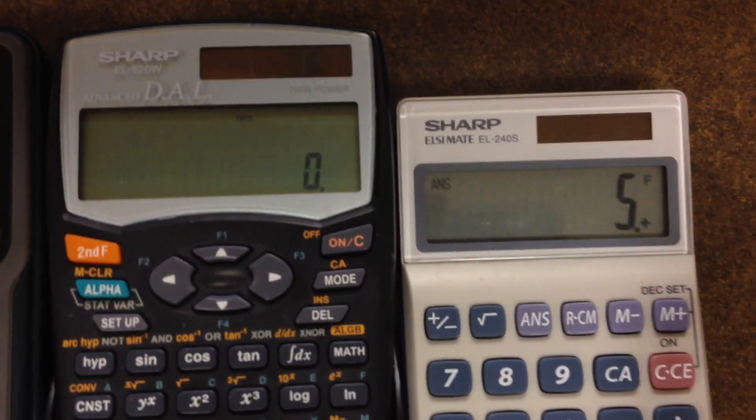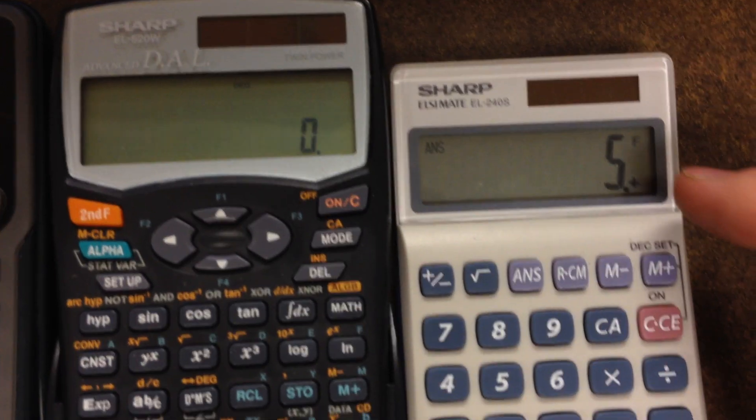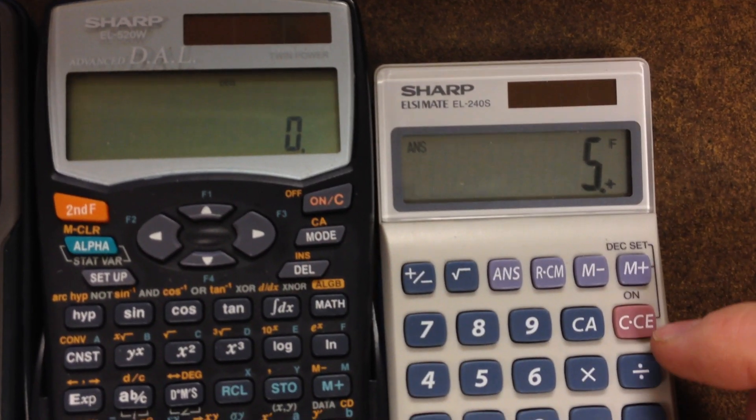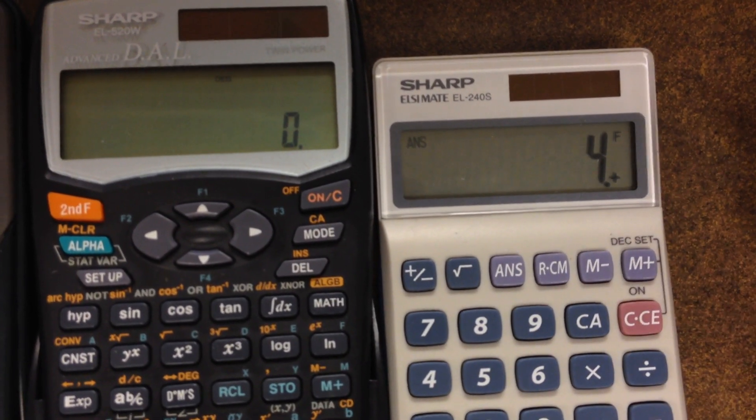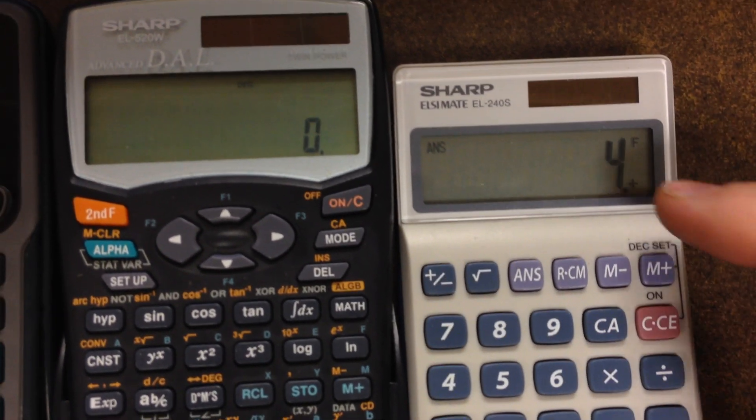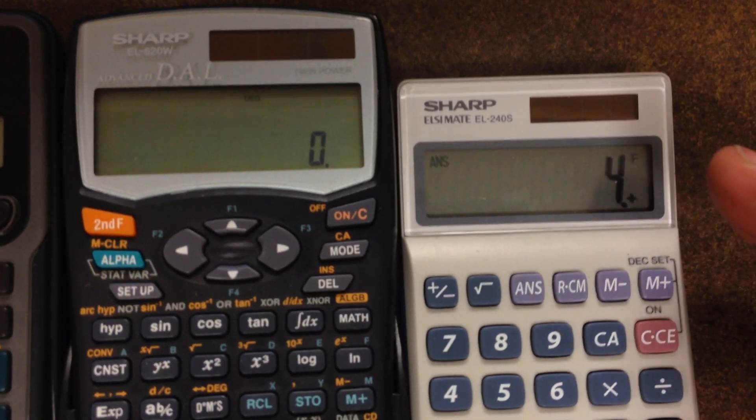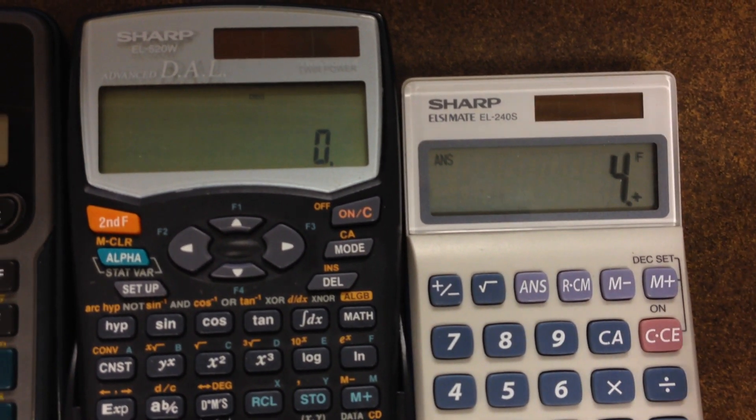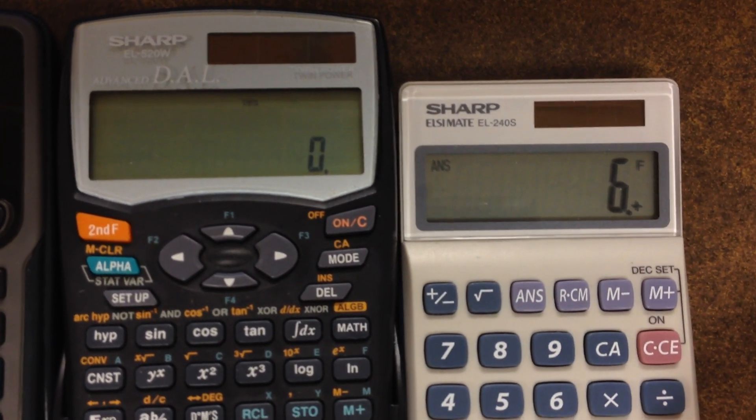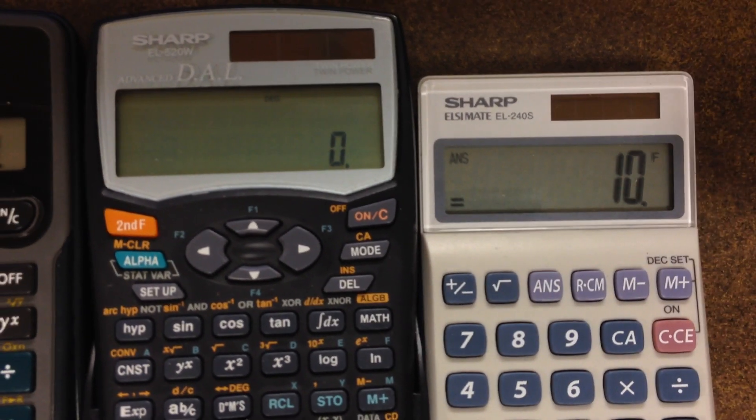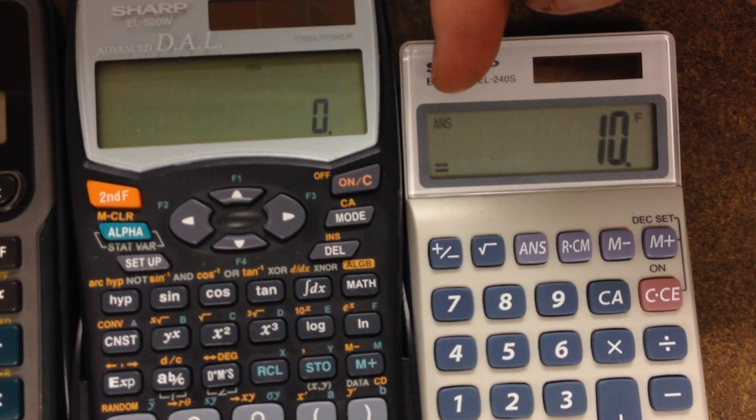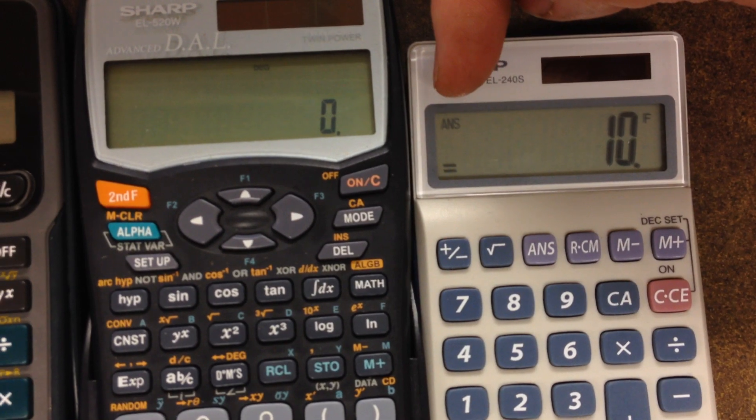Instead of getting rid of everything, you can just clear the last entry, the 5, with the CE button. Then you have the 4 plus, or everything from a long list that was entered before is still saved in the calculator. Then 4 plus 6 equals 10. And this 10 also makes it to the last answer memory of the calculator.